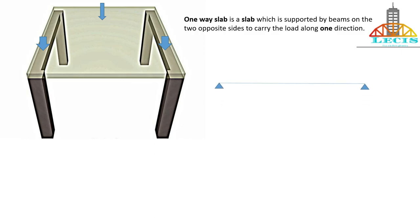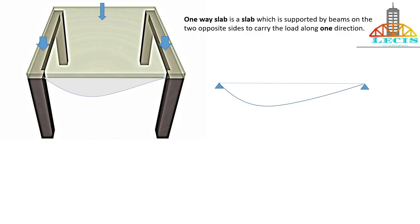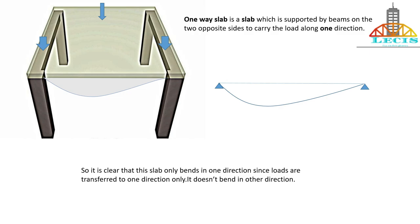This is the line diagram. The two triangles represent the supports, that is, these two beams, and this line represents the slab. It is supported on these two beams. Since loads are transferred to the supports, there will always be reactions on the supports. Due to the development of reactions, bending moment develops at various locations of the structure. The structure bends in this way. Since there are no supports in the transverse directions, there will be no bending in those directions — thus the slab bends in only one direction.